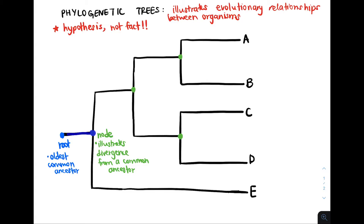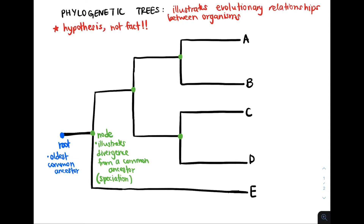For example, this branch split apart at this node into two different groups of species. Likewise, this common ancestor diverged into these descendant species. At this node, the branch splits into species B and species A, and at this node, the branch splits into species C and species D. So speciation occurs at the point where the node is located, because that is where the most recent common ancestor diverges into two descendant species.